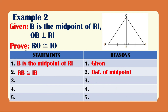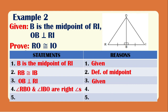For the third statement, OB is perpendicular to RI, which is another given. Since OB is perpendicular to RI, it means that two right angles are created: angle RBO and angle IBO. The reason for this is the definition of perpendicularity.